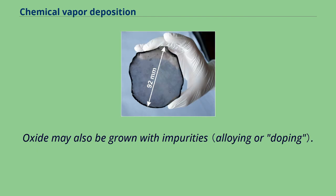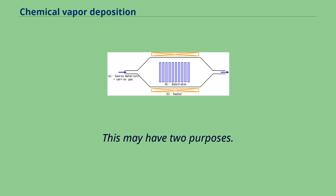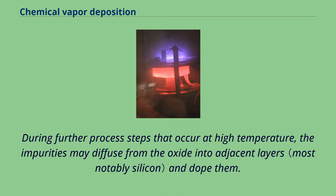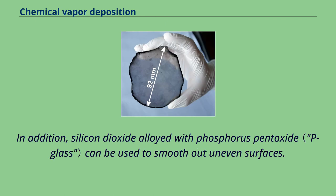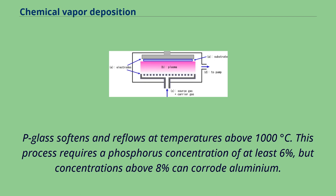Growing oxide with impurities may have two purposes. During further process steps that occur at high temperature, the impurities may diffuse from the oxide into adjacent layers and dope them. Oxides containing 5-15% impurities by mass are often used for this purpose. In addition, silicon dioxide alloyed with phosphorus pentoxide can be used to smooth out uneven surfaces. P-glass softens and reflows at temperatures above 1000 degrees Celsius. Phosphorus is deposited from phosphine gas and oxygen.